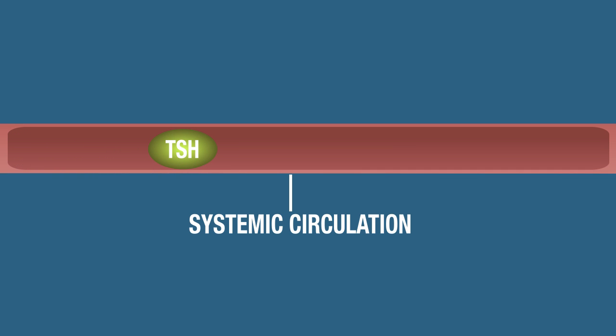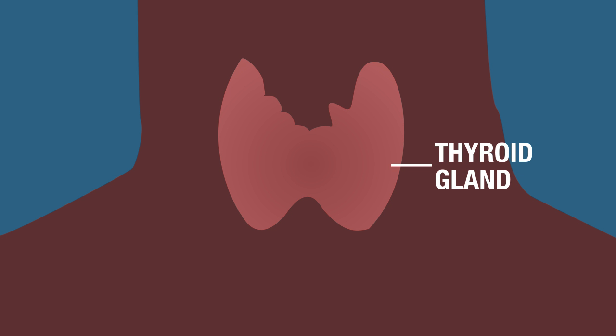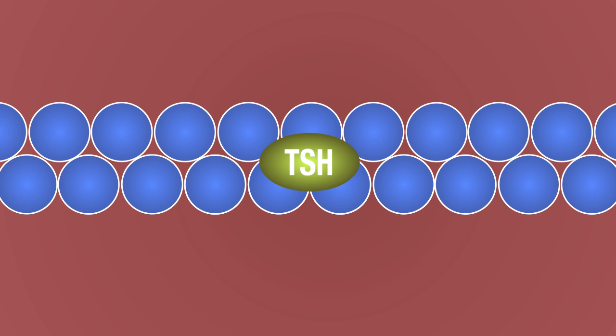Hormones enter into the bloodstream, so once thyroid-stimulating hormone enters circulation, it is going to target the cells of the thyroid gland. Once TSH targets the thyroid gland and binds to receptors on those cells, it's going to promote the synthesis and secretion of thyroid hormone, TH.